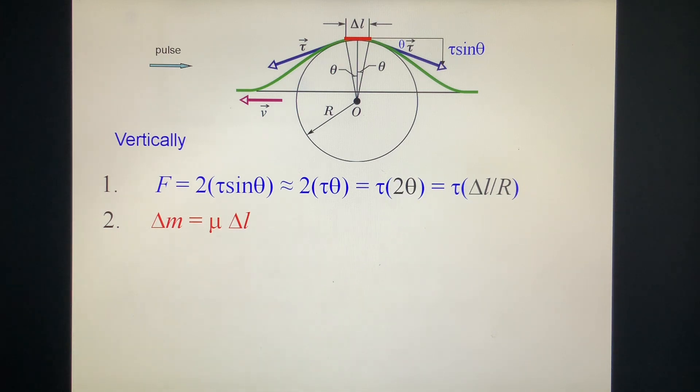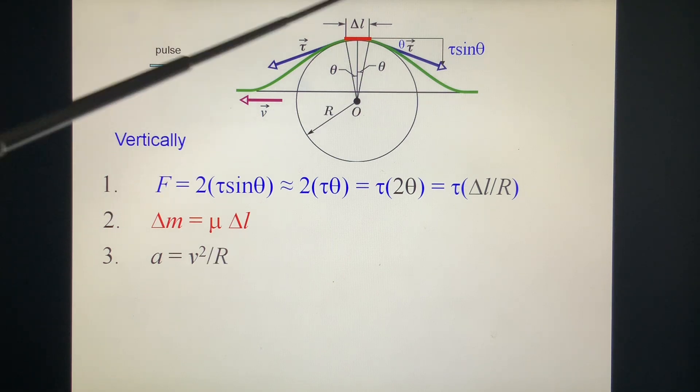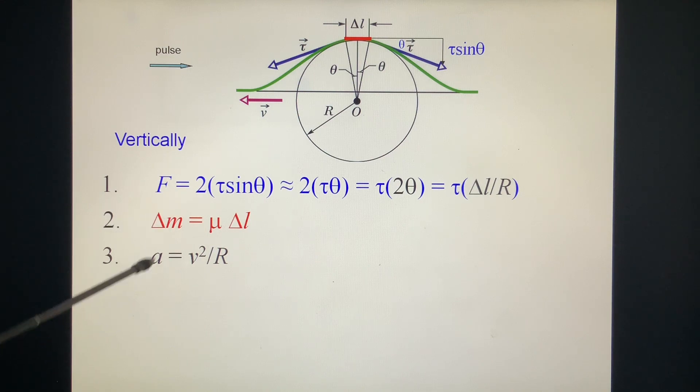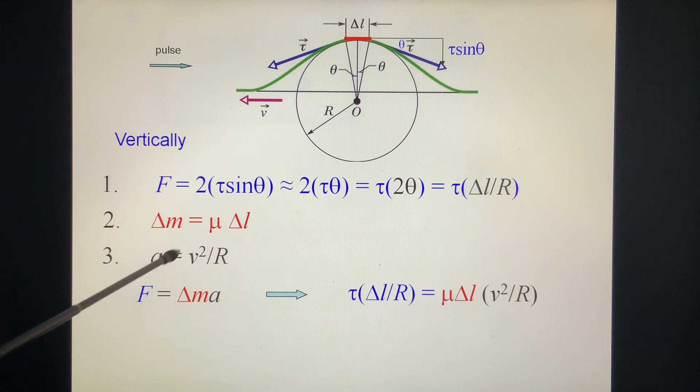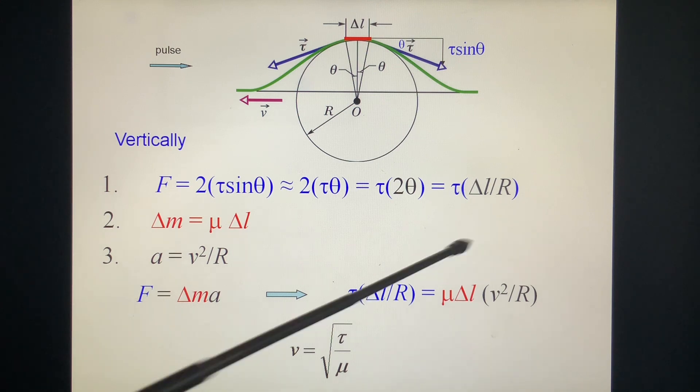The mass of this one is equal to μ times ΔL. The acceleration, because it goes in circular motion, is v²/R. Now, let's write it down for Newton's Second Law: F = ma. F = τΔL/R. M = μΔL. a = v²/R. We cancel out the ΔL, we cancel out R, and we get v² = τ/μ, V = √(τ/μ). It's very simple.